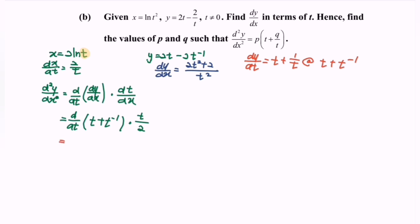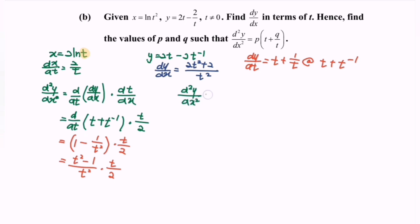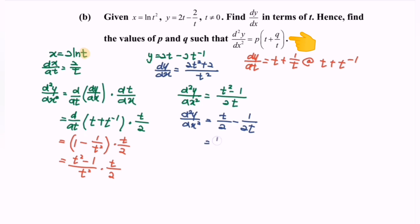Differentiating gives 1 minus 1 over t squared, multiplied by t over 2. Equating the denominator gives (t squared minus 1) over t squared, multiplied by t over 2. Simplifying, the second derivative equals t over 2 minus 1 over 2t. Factoring out 1 over 2, the second derivative equals (1/2)(t minus 1 over t).